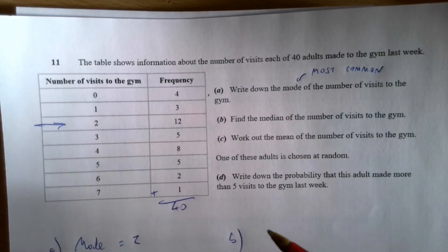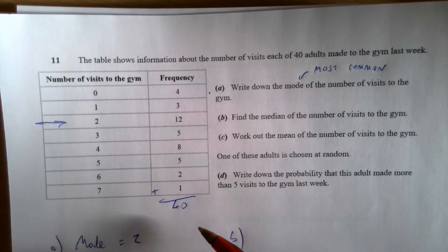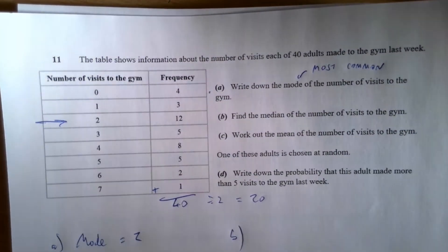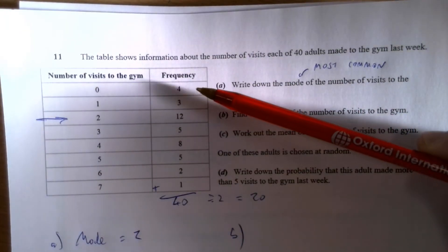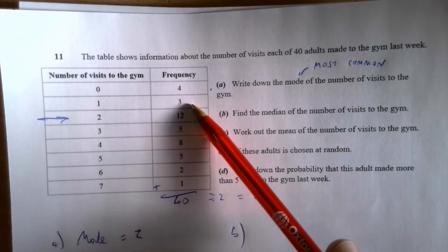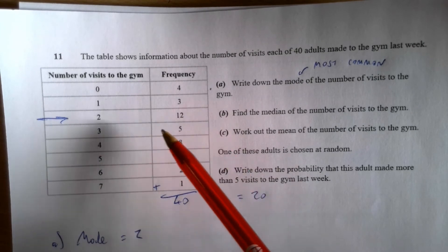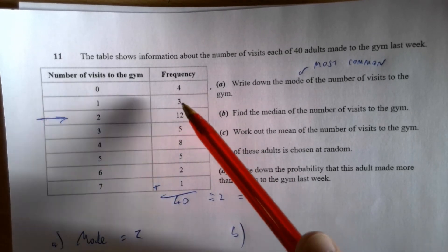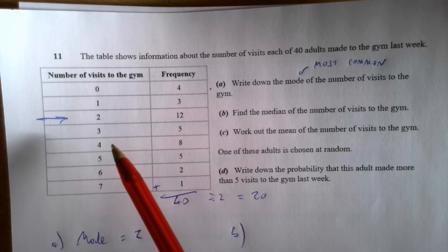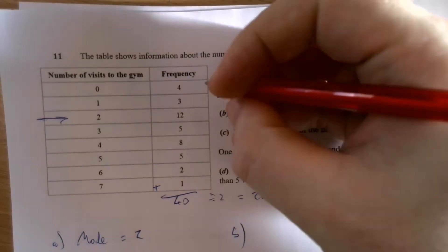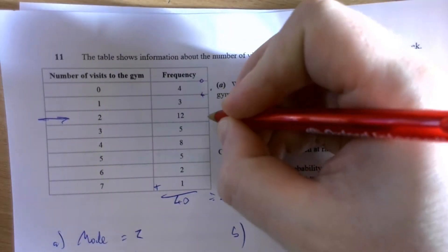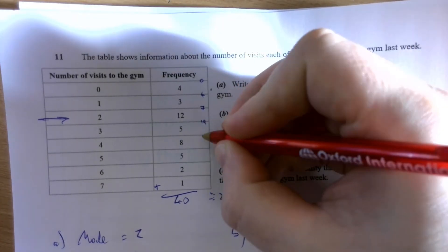Now, the median is going to be halfway, which is 40 divided by 2, 20. Halfway up. The first four people in this survey went to the gym zero times. The next three people went once. 12 went two times. 4, 7, 19. The 20th person will visit the gym three times.